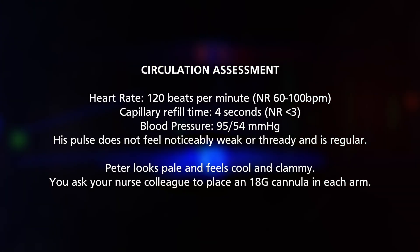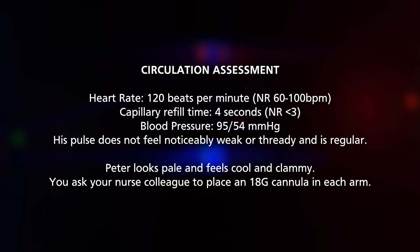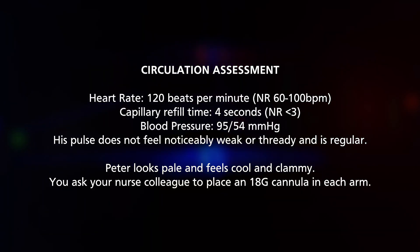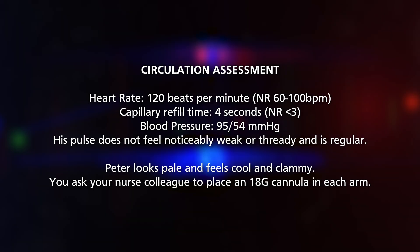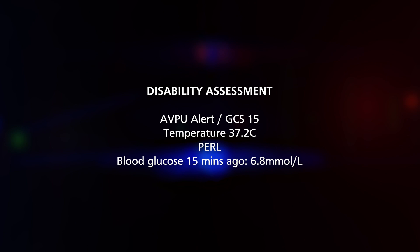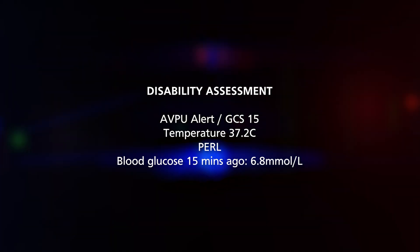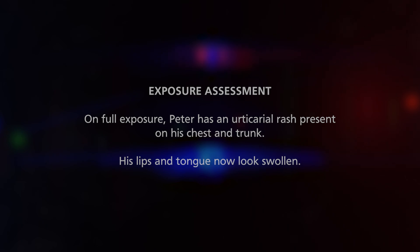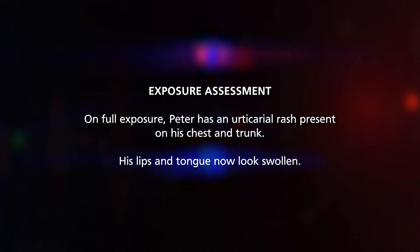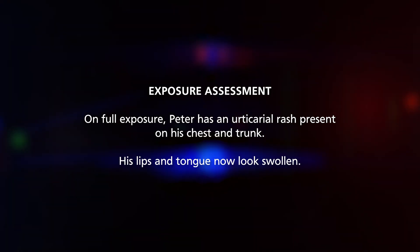Then we move to C for circulation. His heart rate is 120 beats per minute, he has a capillary refill time of 4 seconds, blood pressure of 95 over 54, and he looks pale and feels cool and clammy to the touch. We ask a nursing colleague to put in two wide-bore 18 gauge cannulae, one in each arm. Moving on to D for disability: Peter is fully alert, temperature 37.2°C, pupils equal and reactive to light, and blood glucose 6.8. Lastly, we completely expose Peter, who has an urticarial rash visible on his chest and trunk, and his lips and tongue look noticeably swollen. We have airway, breathing, and circulation symptoms along with urticarial skin changes, so we will very promptly begin our anaphylaxis treatment algorithm.